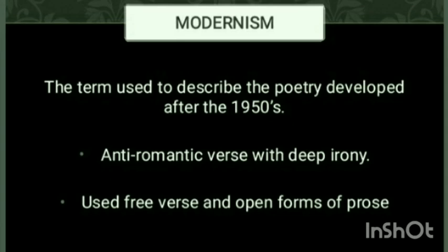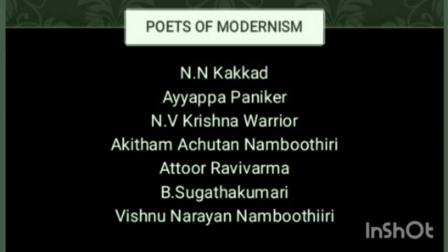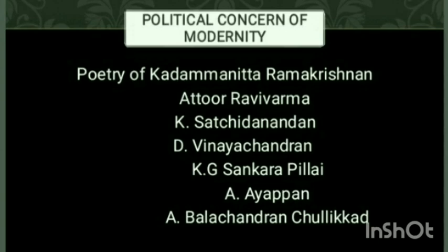Next, we have Modernism in Malayalam Poetry. The term Modernism is used to describe poetry developed after the 1950s. It is anti-romantic in nature with deep irony, and it uses free verse and open prose forms. The poets of Modernism include N. N. Kakkad, Ayyappa Panicker, N. V. Krishna Warrier, Akkitham Achuthan Namboothiri, Attoor Ravi Varma, O. N. V. Kurup, Sugathakumari, and Vishnu Narayanan Namboothiri. There was also a strong political concern within Modernism.